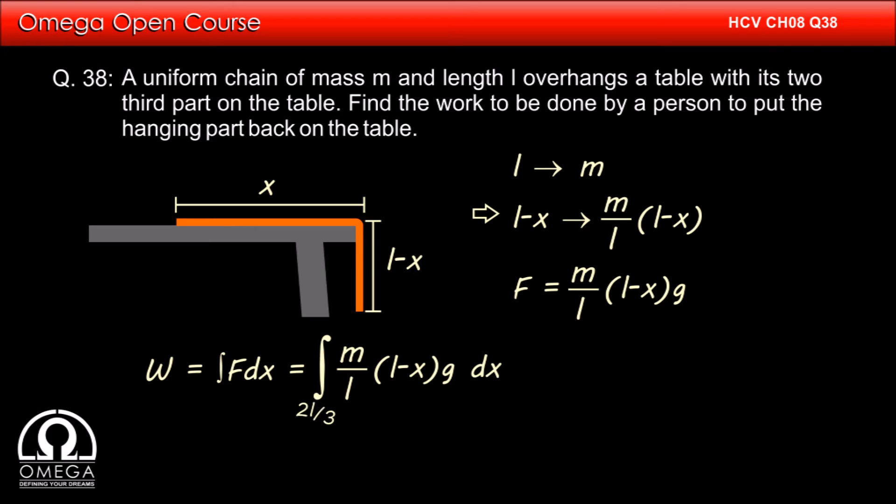Since initially 2L by 3 part of the chain was on the table, the lower limit of the integration is 2L by 3. Also, since finally the entire chain is on the table, the upper limit of the integration is L.